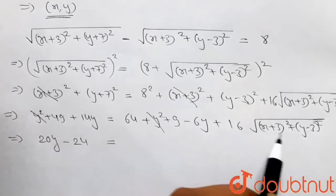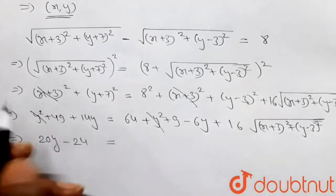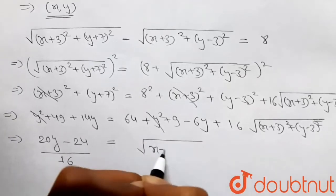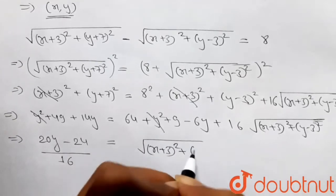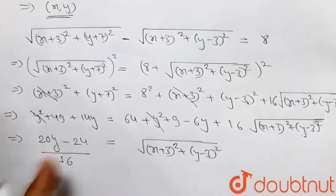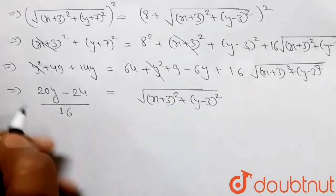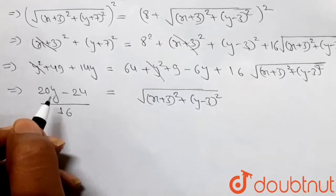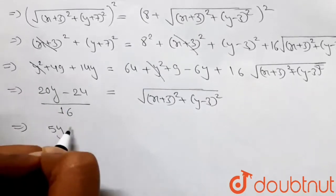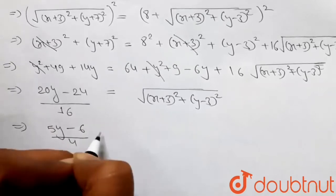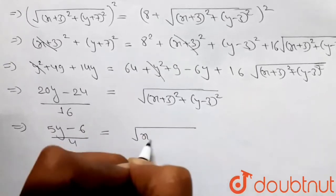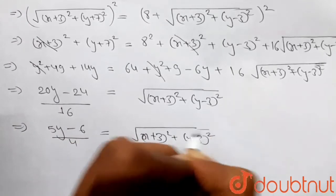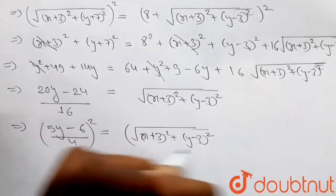Simplifying further: 20y - 24 = 16√[(x+3)² + (y-3)²]. Dividing both sides by 4, we get (5y - 6)/4 = √[(x+3)² + (y-3)²]. Now let's square both sides again.